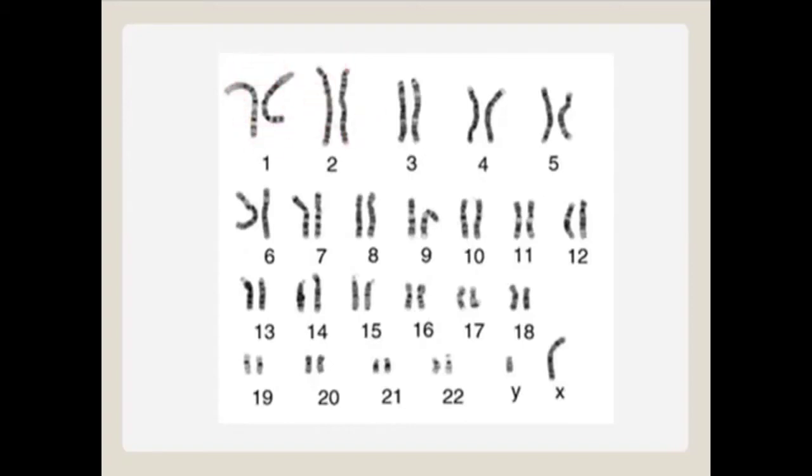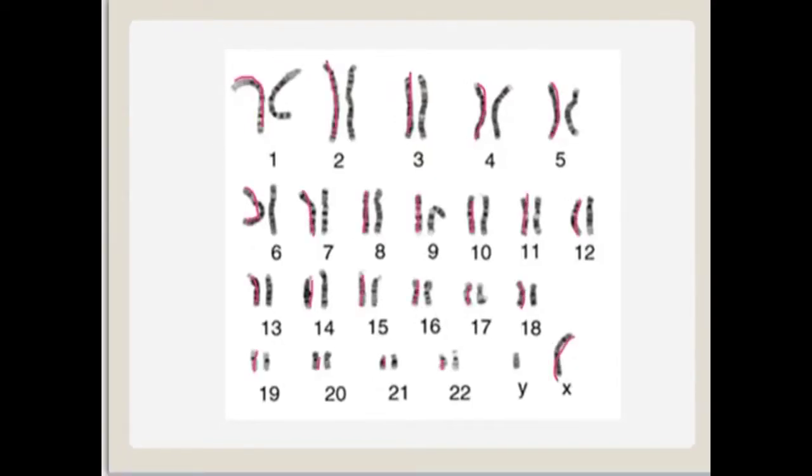One set of 23 chromosomes comes from the maternal side, or mom. You can see the maternal side here highlighted in red. The other 23 chromosomes come from the paternal side, or the dad. Highlighted here in blue.